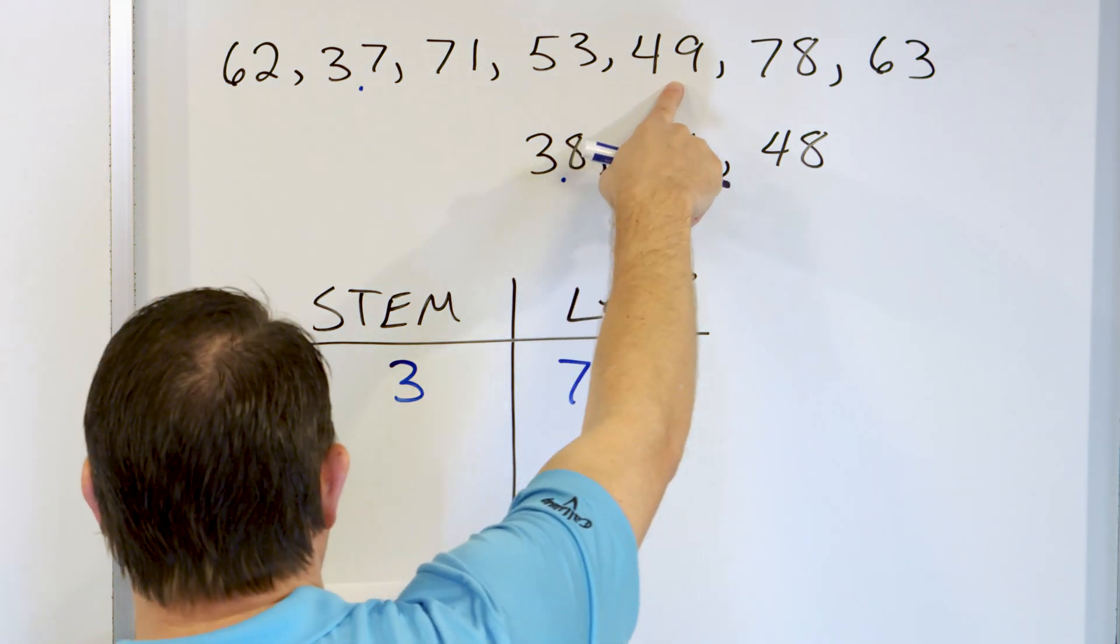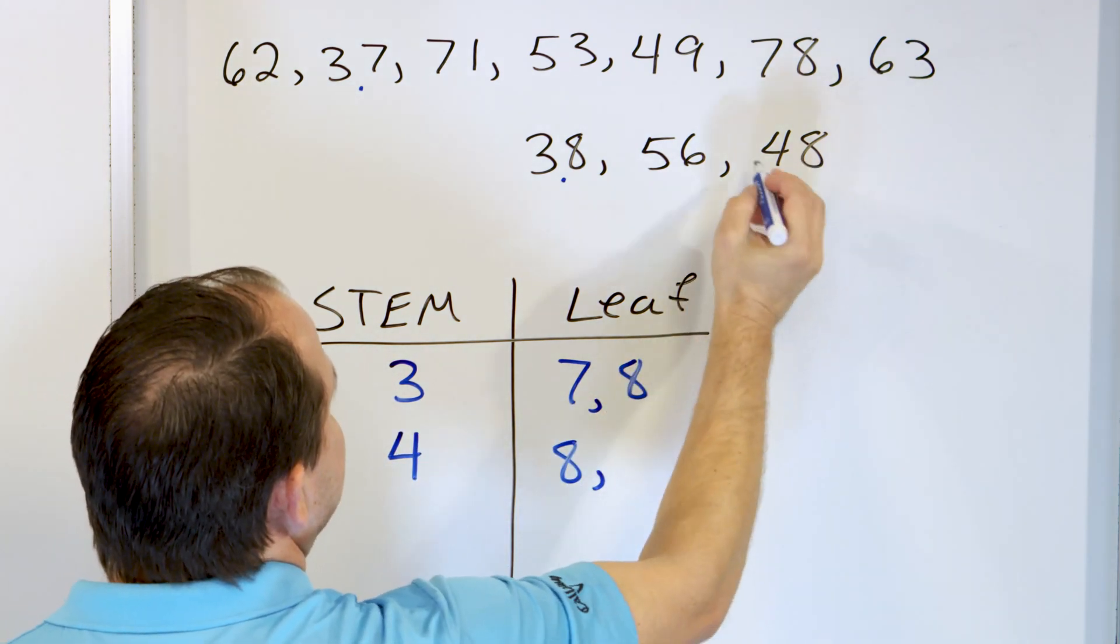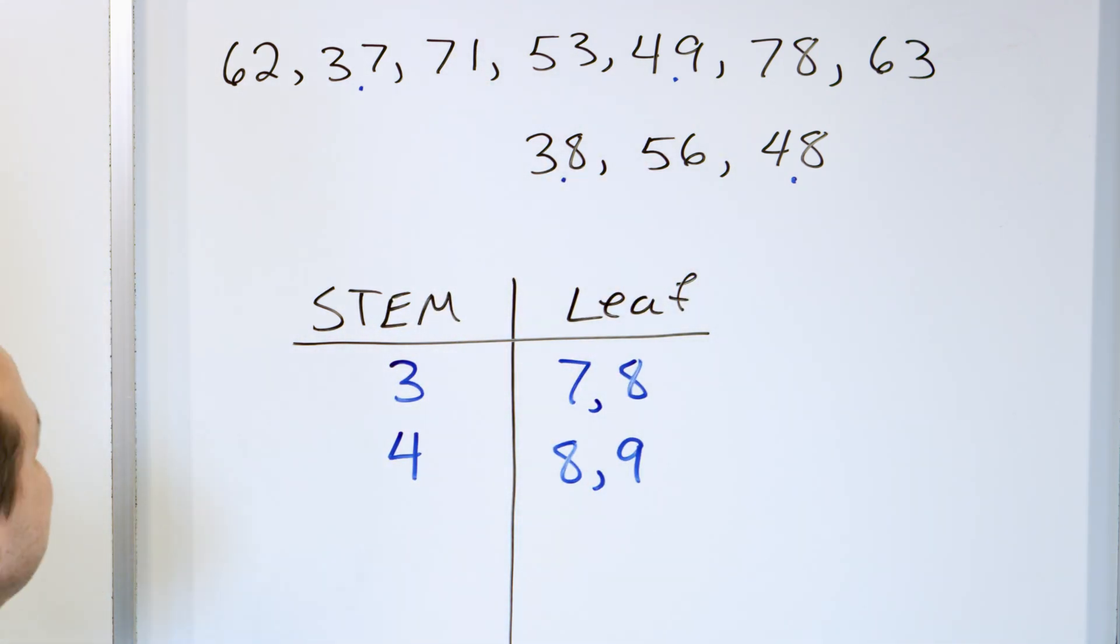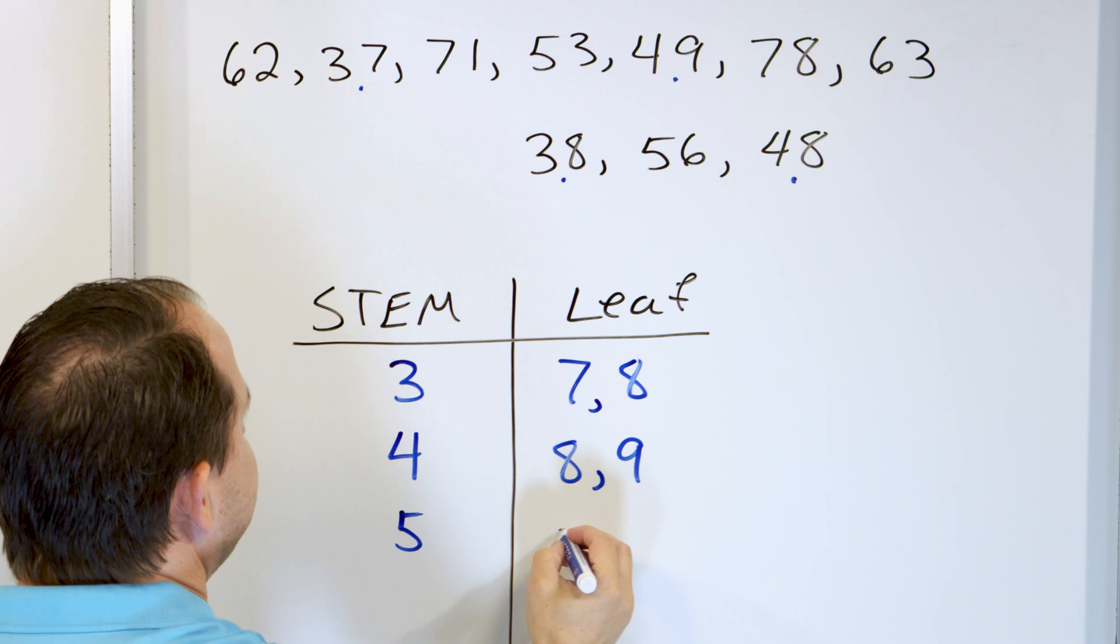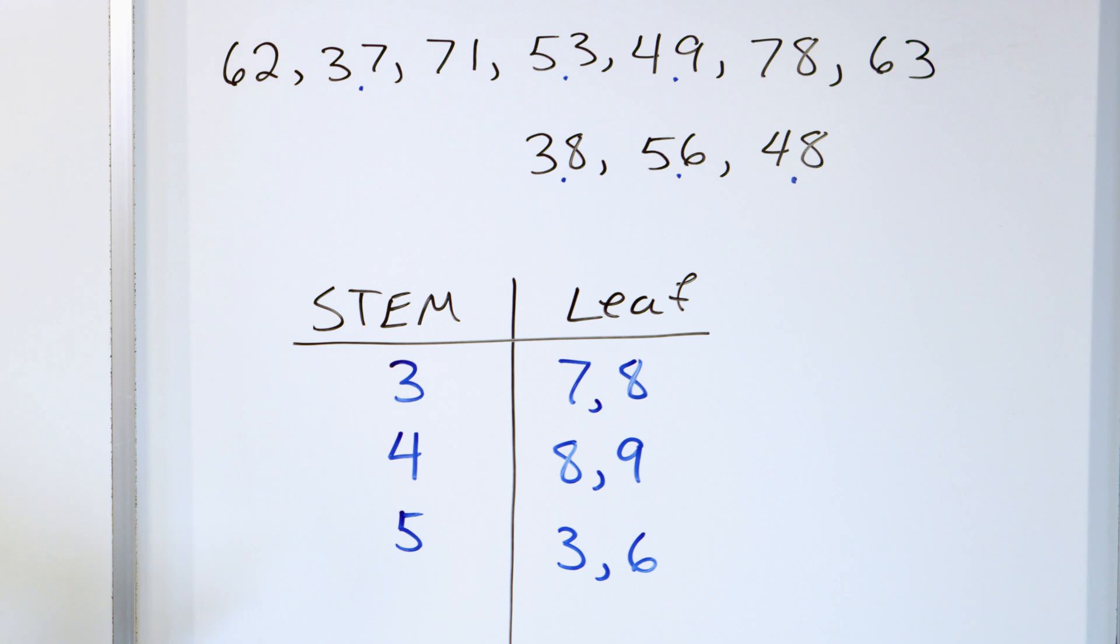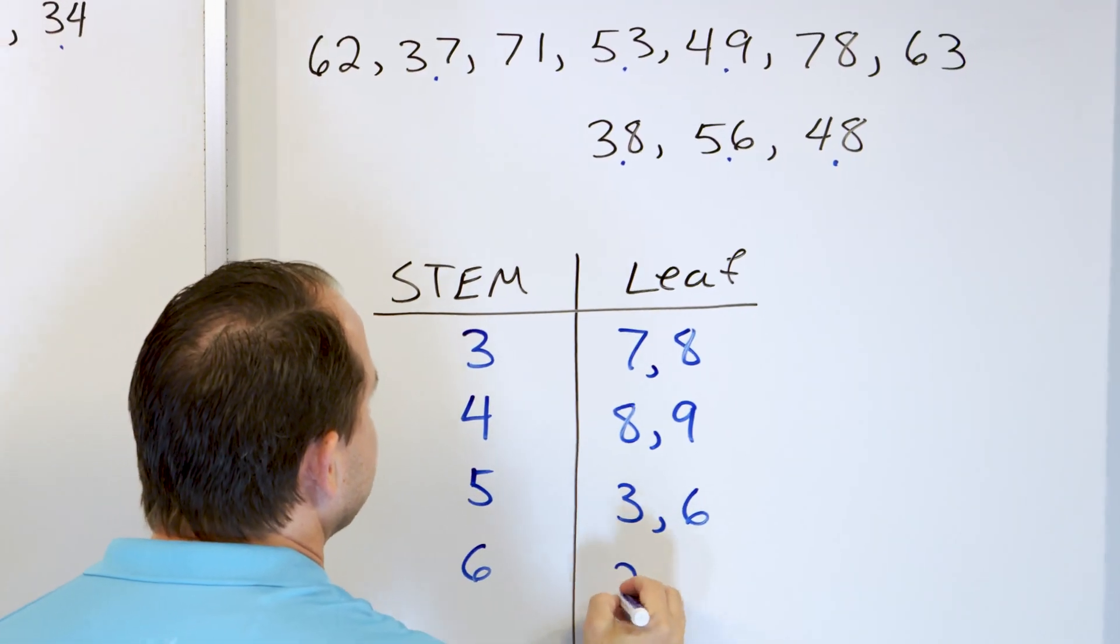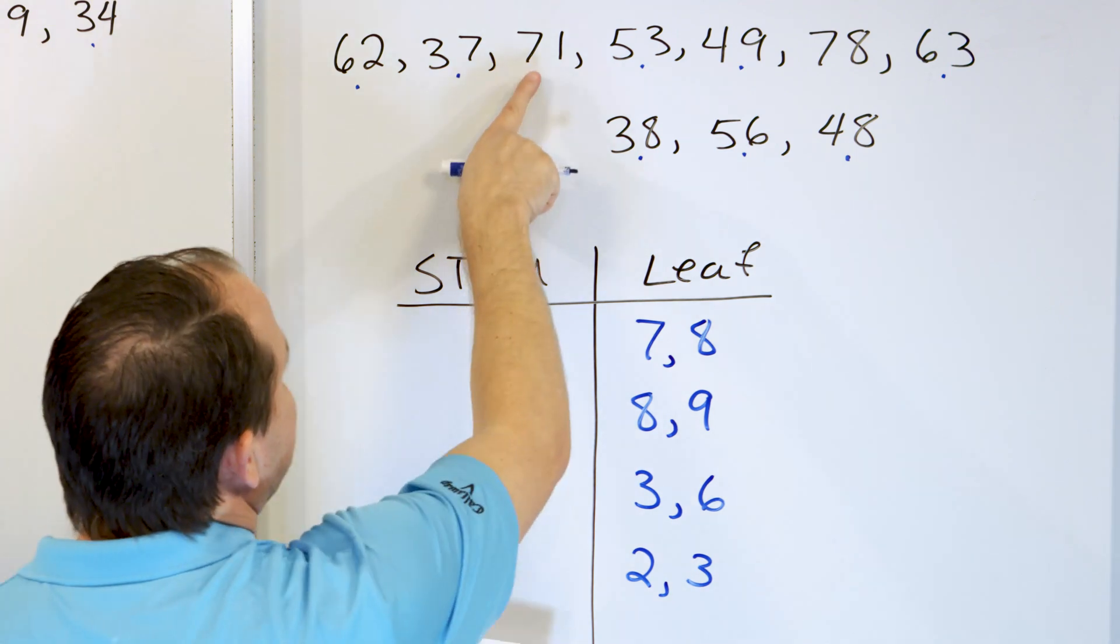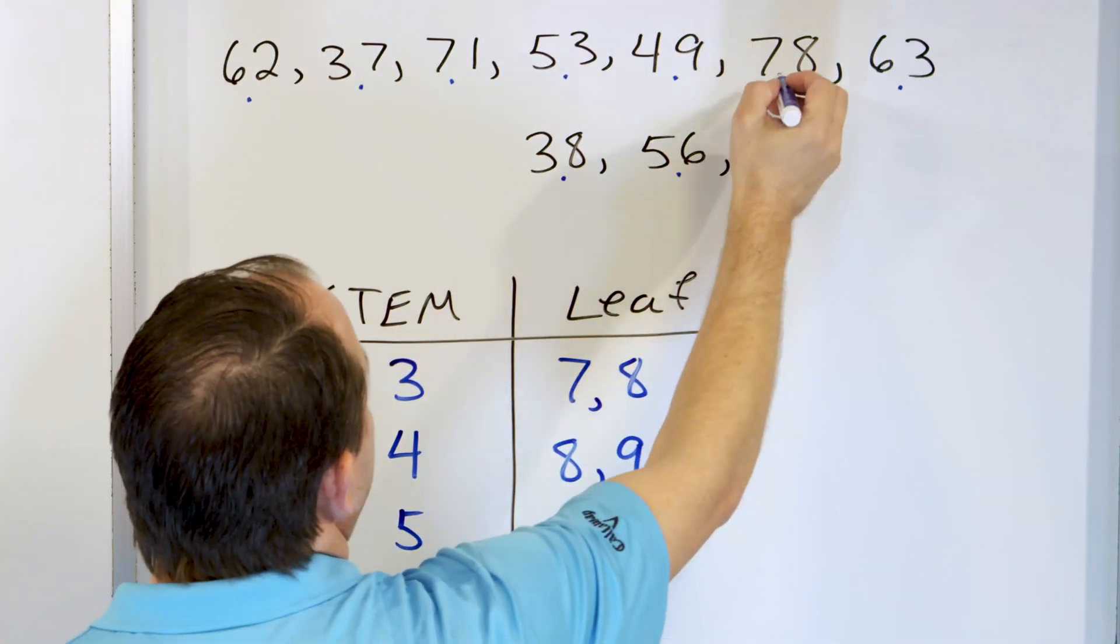Now let's look in the 40s. We have a 49 and then we have a 48. So we'll put the 48 first, and then the 49 will be comma 9, 48, 49. Now let's look in the 50s. We have a 53 and we have a 56. So 53 is going to come first. And then 56 will come next. So we have a 3 and a 6 there, 53, 56. Now in the 60s, we have a 62 and a 63. So 62 will come first. And then we have a 63 right here. And then in the 70s, we have 71 and 78. So we have a 7 for the stem, a 1 and comma 8. So that's 71 and 78.